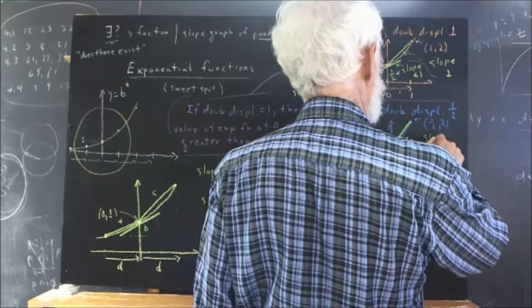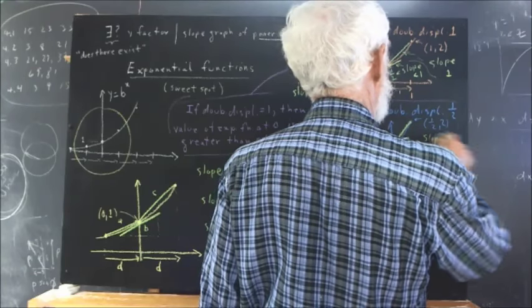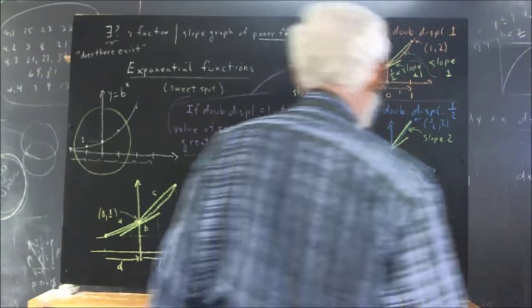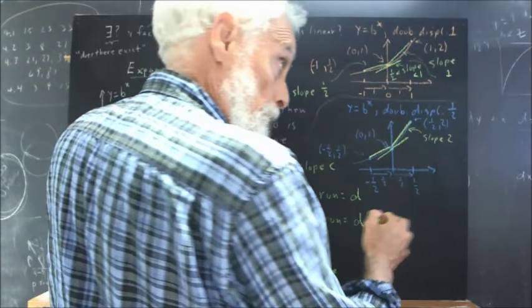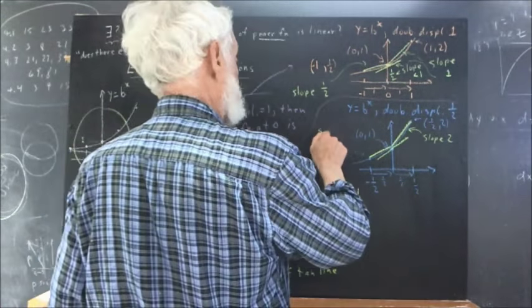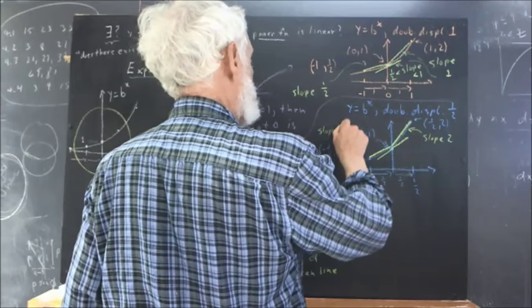So now the slope here is 2. And similar reasoning over here, the rise is 1 half, the run is 1 half, the slope is 1.